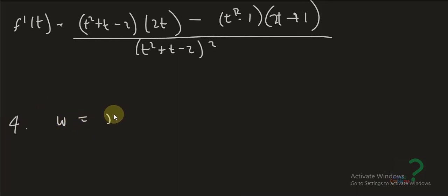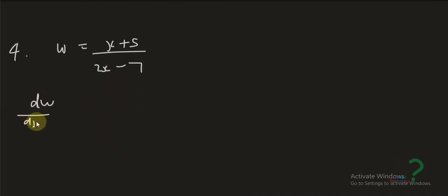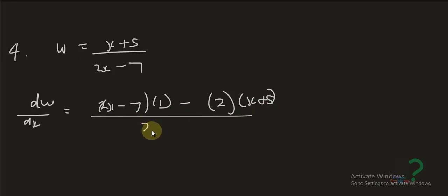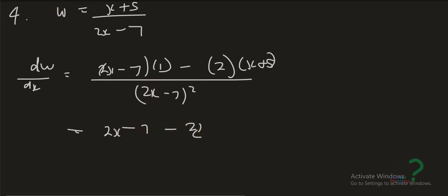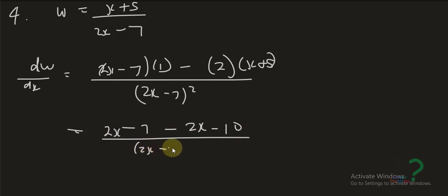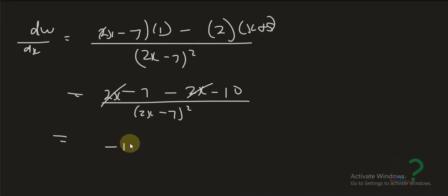Another quotient rule example: w equals (x plus 5) over (2x minus 7). So dw over dx equals (2x minus 7) times 1, minus (x plus 5) times 2, all over (2x minus 7) squared. Simplifying: 2x minus 7 minus 2x minus 10, which gives negative 17 over (2x minus 7) squared.